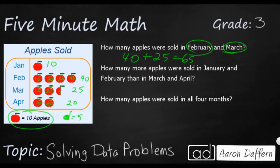How many more? Oh, that lets me know we're going to compare. We're going to subtract. Apples were sold in January and February, then in March and April. So this is a multi-step problem. We're going to have to add up January and February.